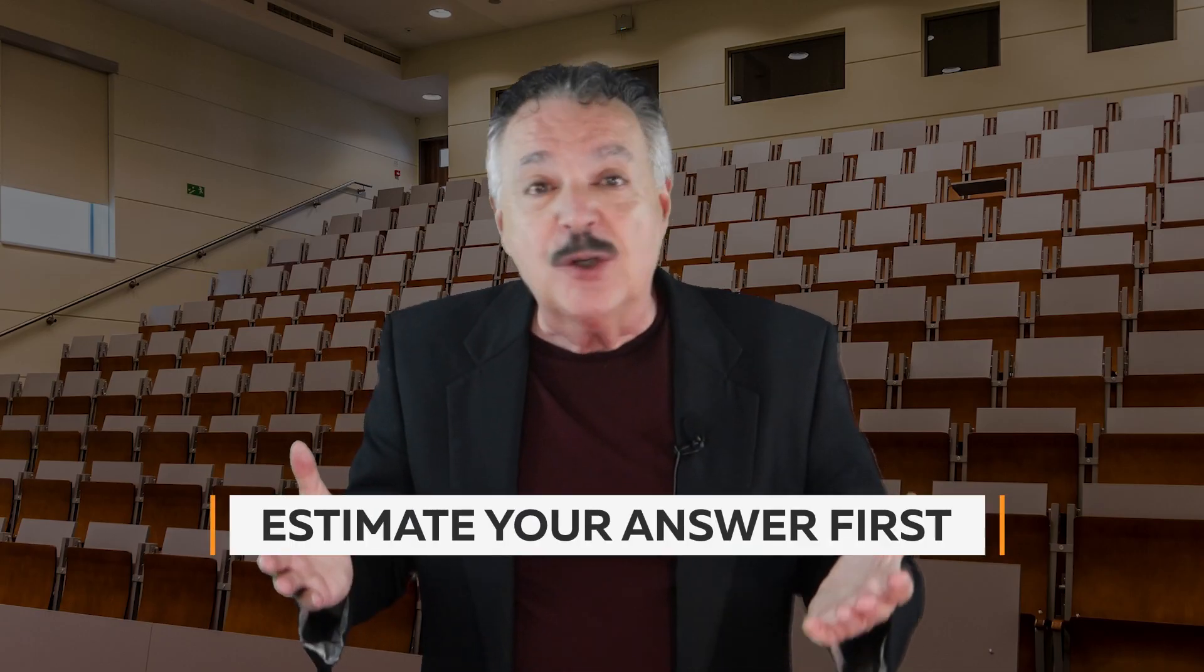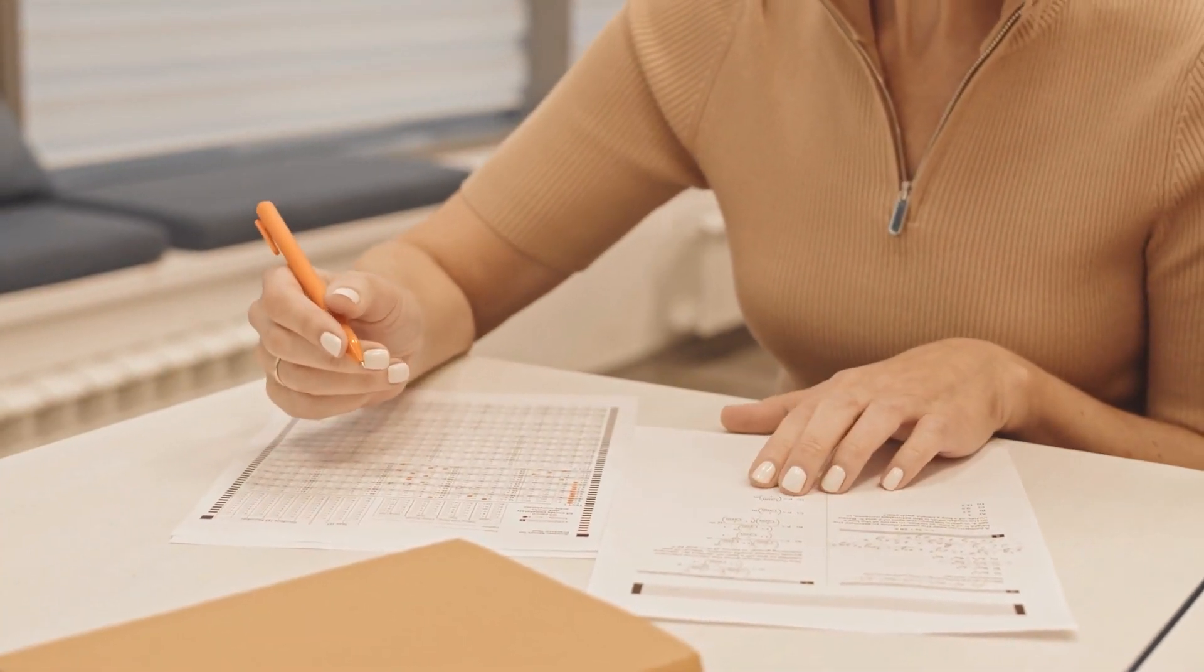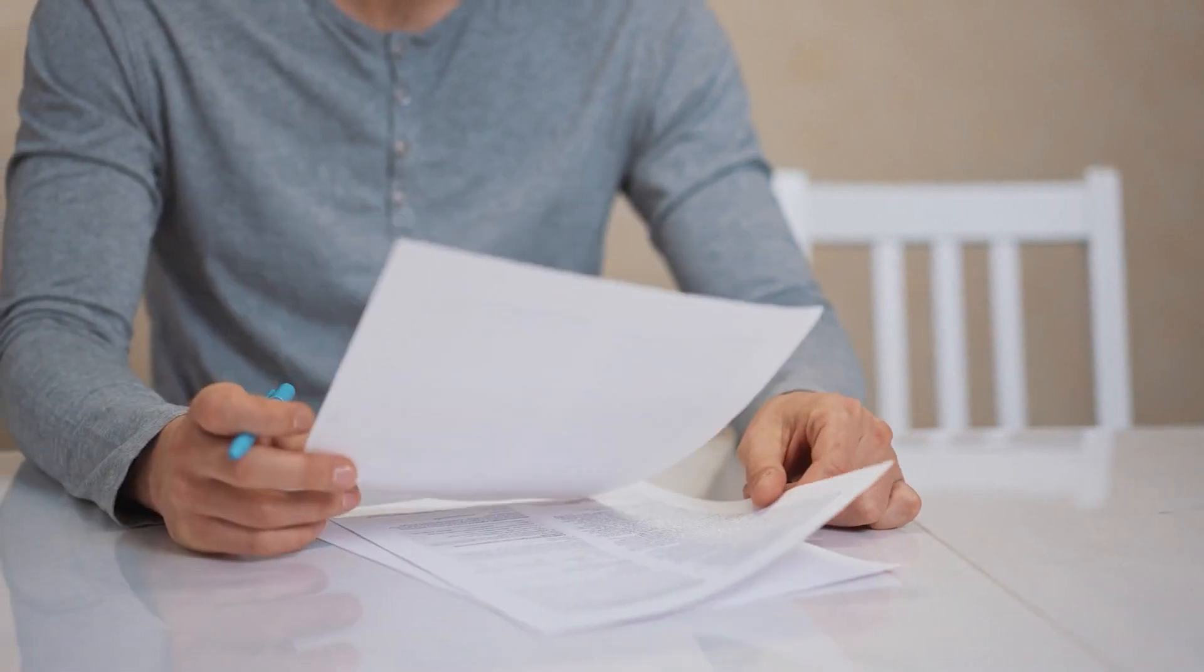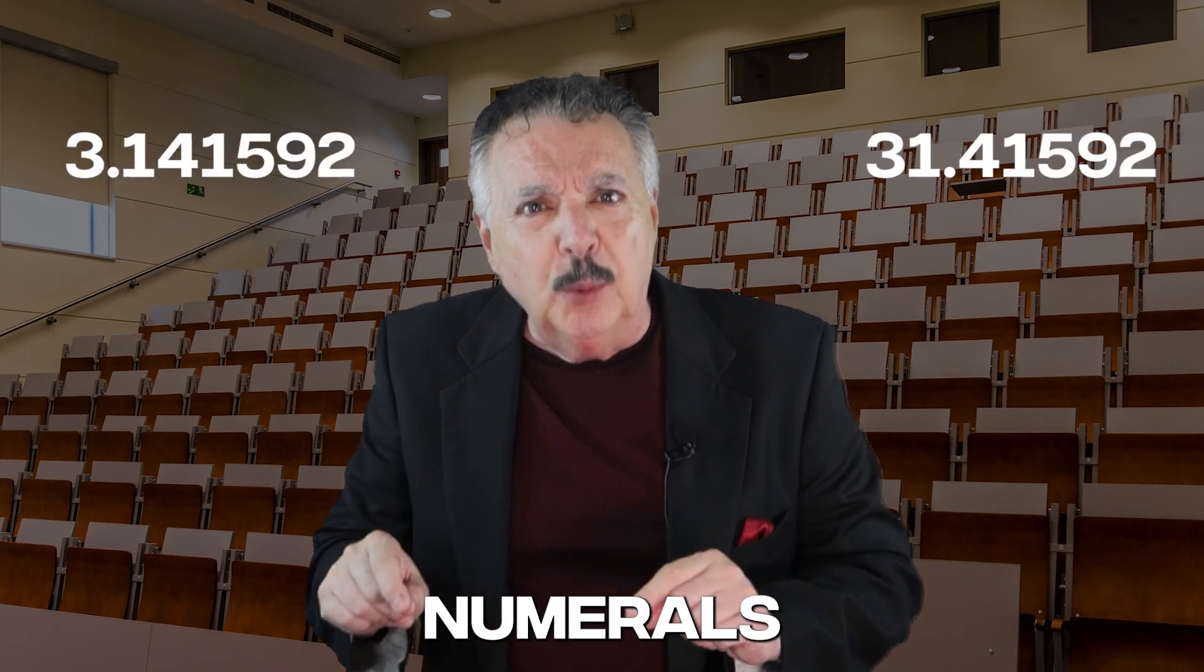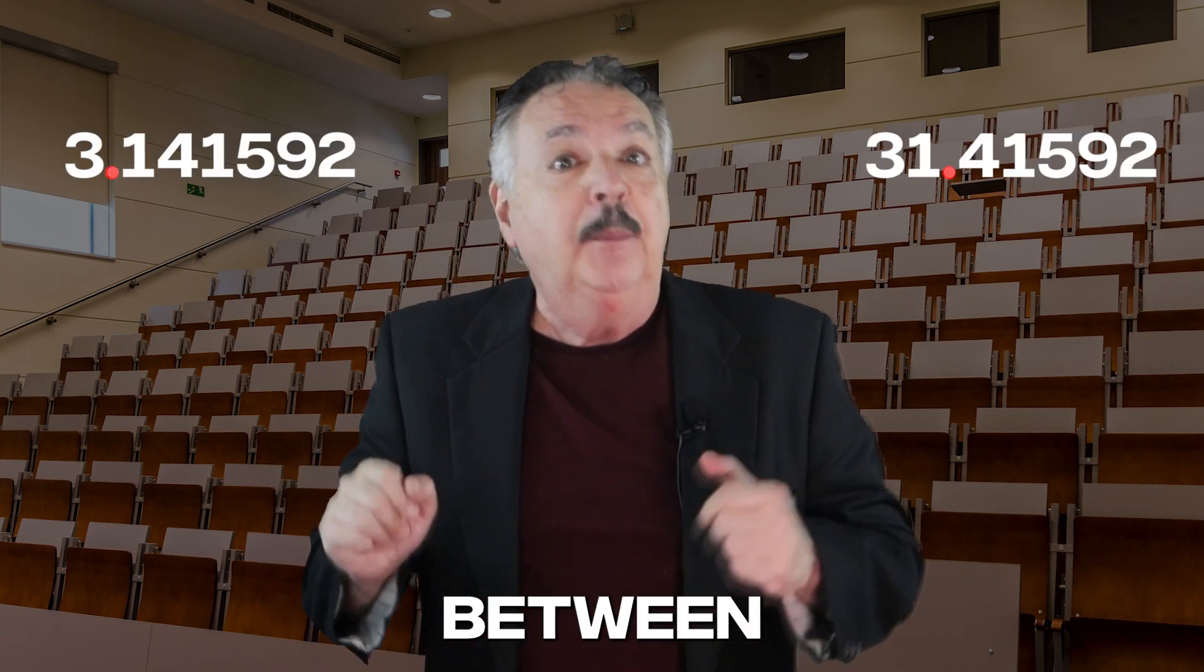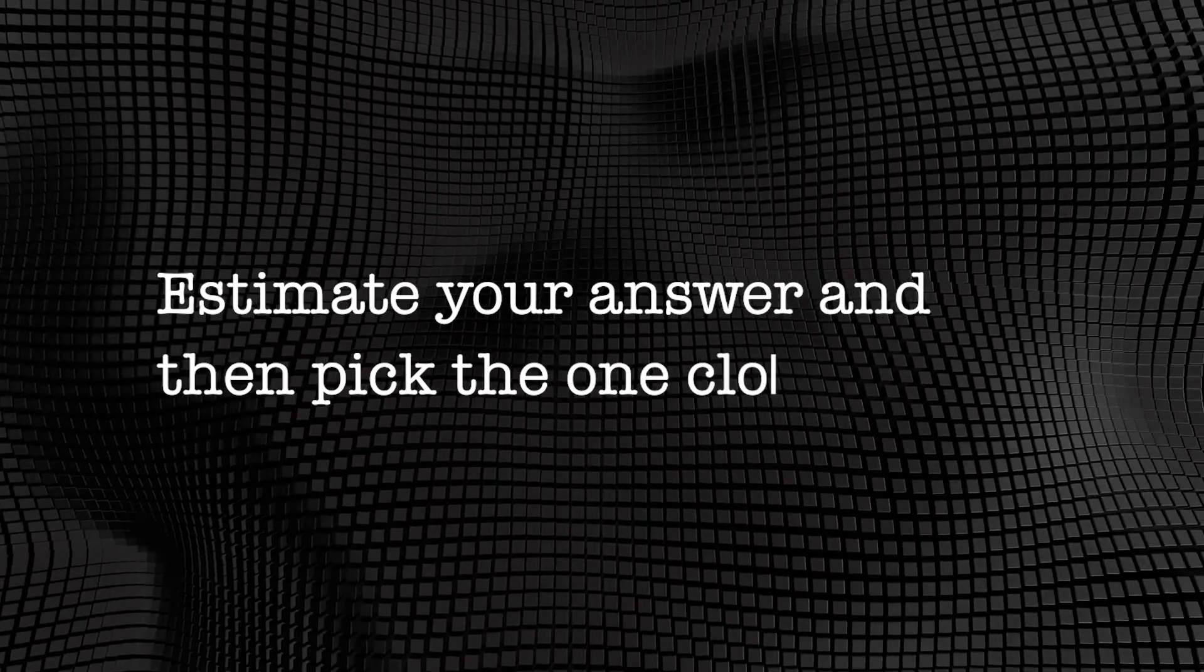Three, estimate your answer first. Often the test giver will supply two possible answers that look very similar and a couple that are wildly different. Even though the actual numerals are similar, perhaps the decimal point is placed between the wrong digits. If at all possible, estimate your answer and then pick the one closest to it. You'll usually be correct and you'll have saved time versus doing all the long calculations.